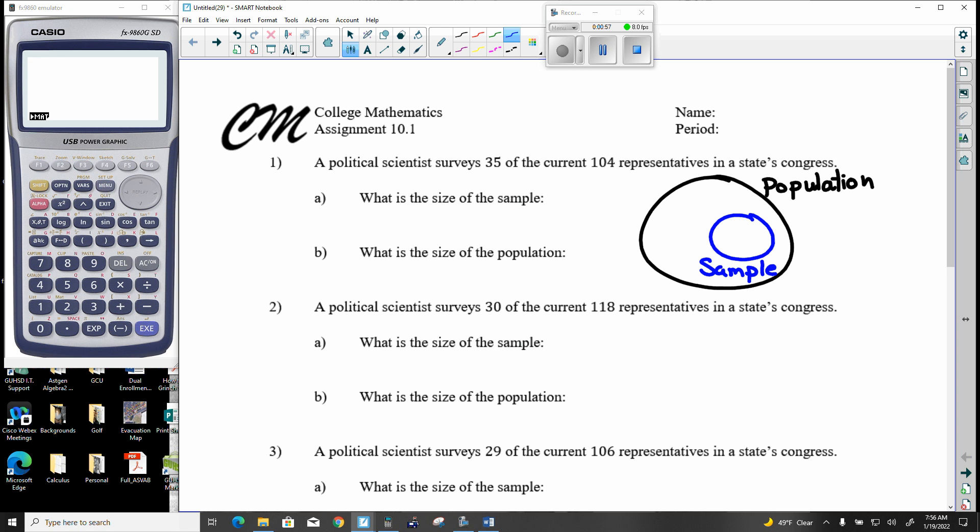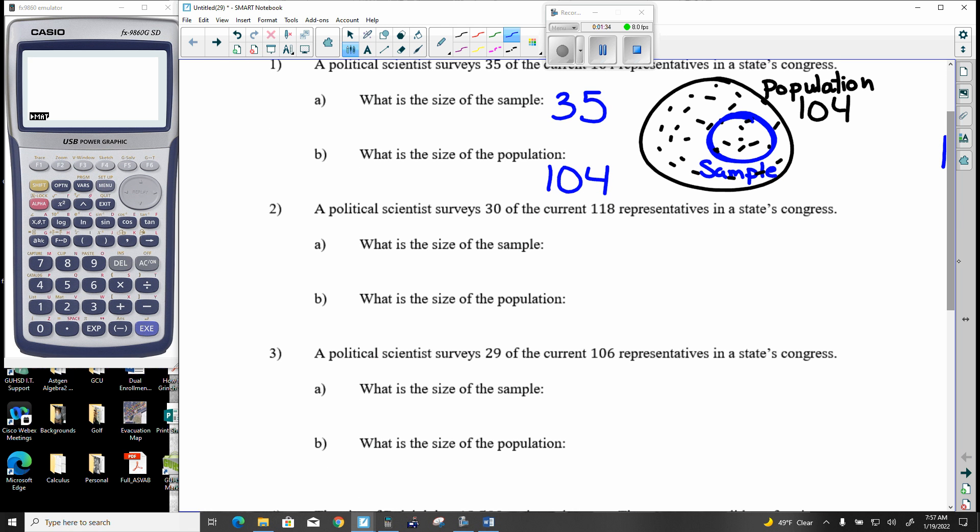So for instance, in this situation, there is 104 grand total representatives. And I sampled, and it just so happens to be 35 of them. So what is the size of the sample? The sample size was 35. What's the population? That's 104.